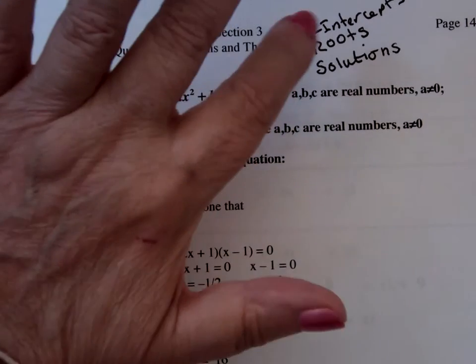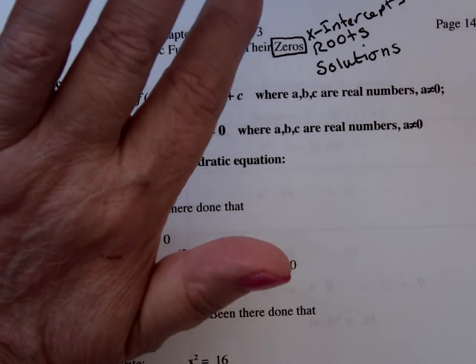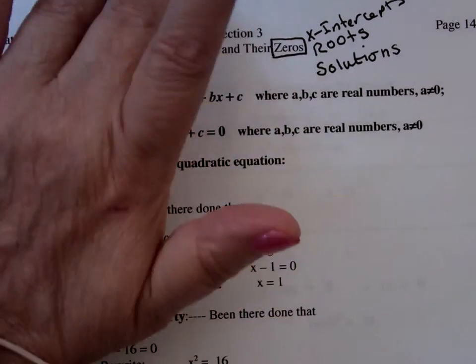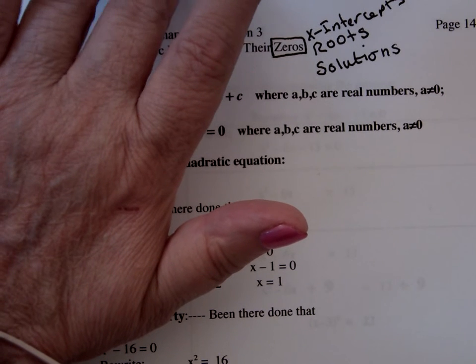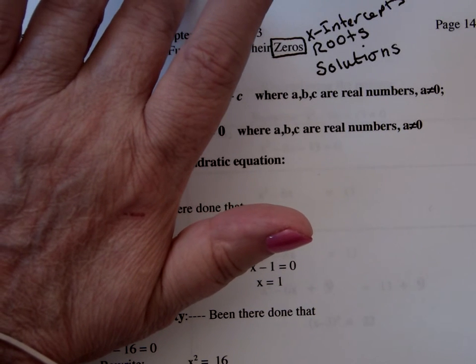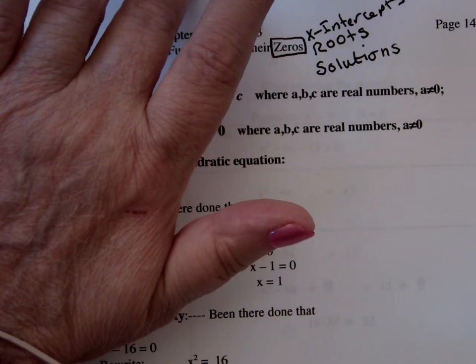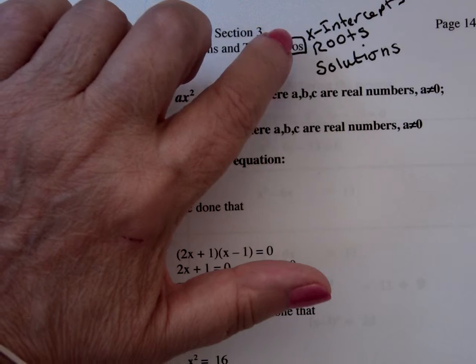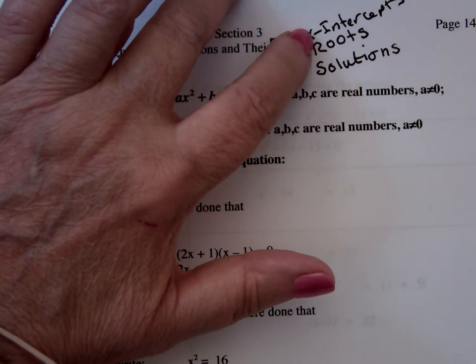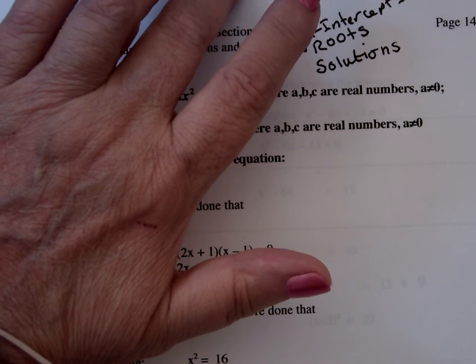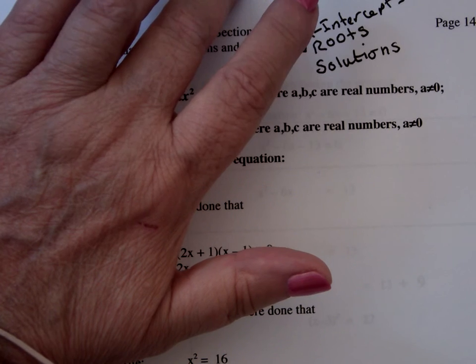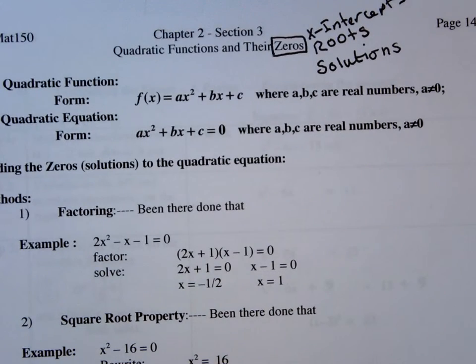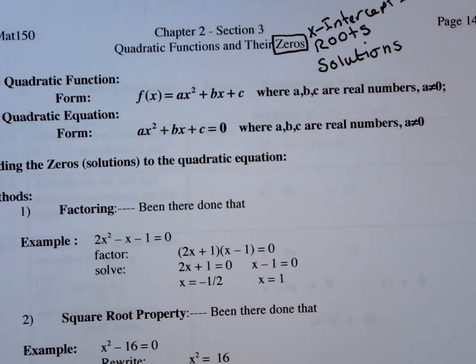Now, if the solutions are imaginary, and we're not going to get into that until, I don't remember now what chapter, my mind is gone, is that if they're imaginary, they can't be x-intercepts, but they can be zeros, they can be solutions, they can be roots, but they can't be x-intercepts, because imaginary numbers don't cross the x-axis. That's why they're imaginary.